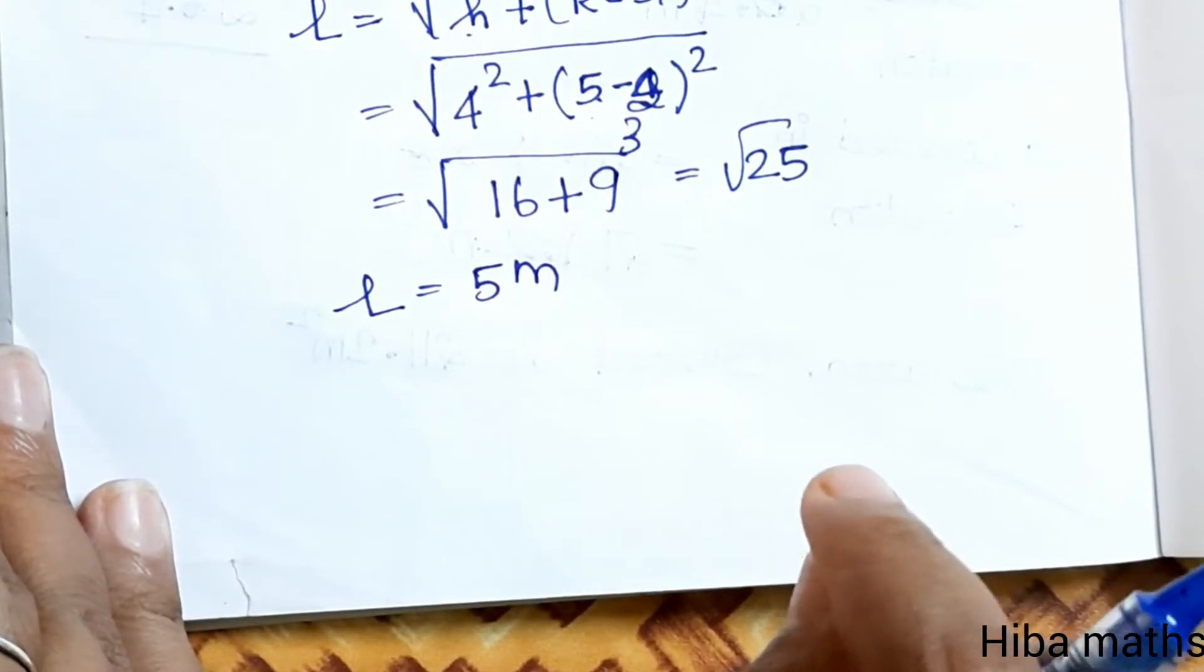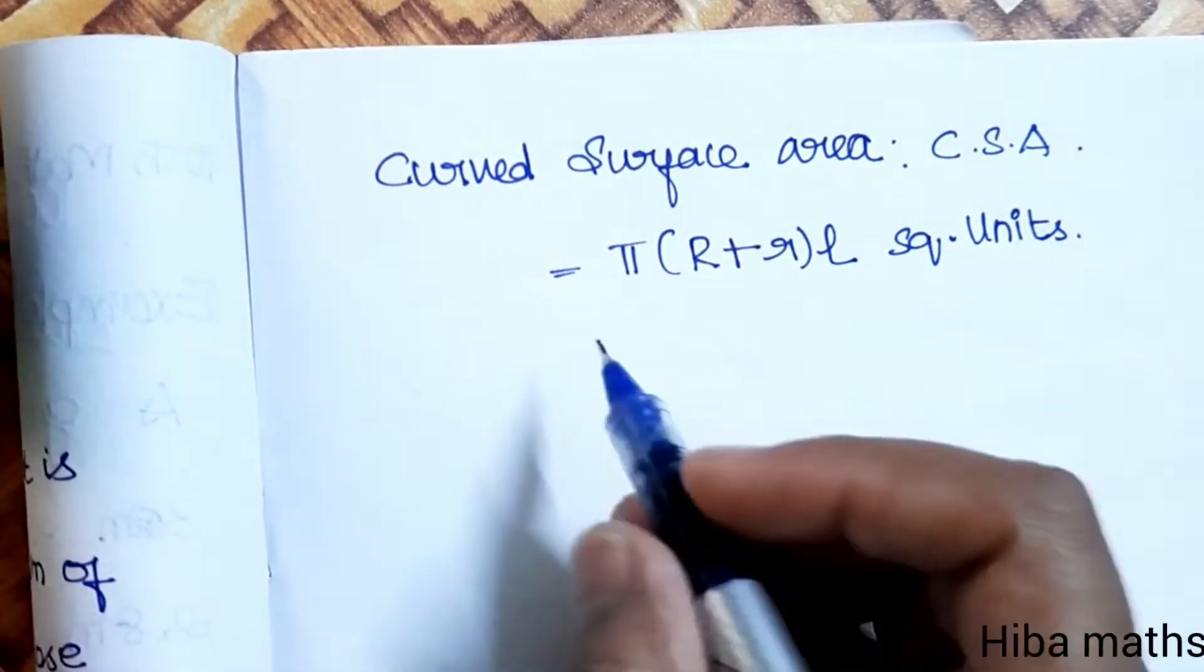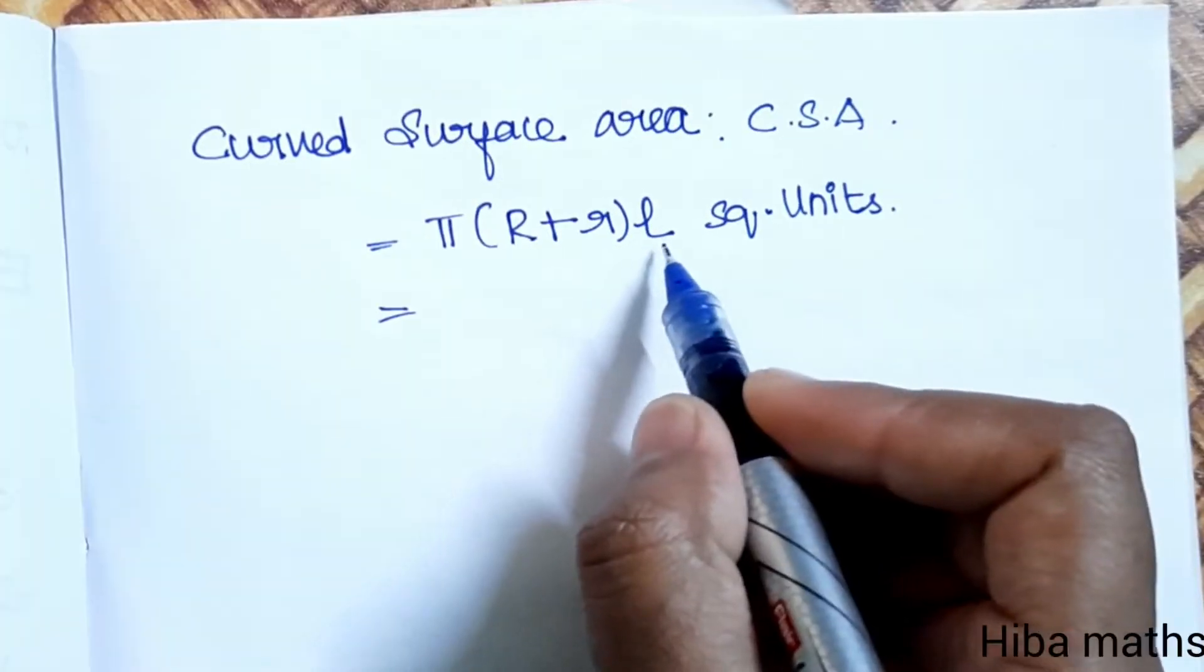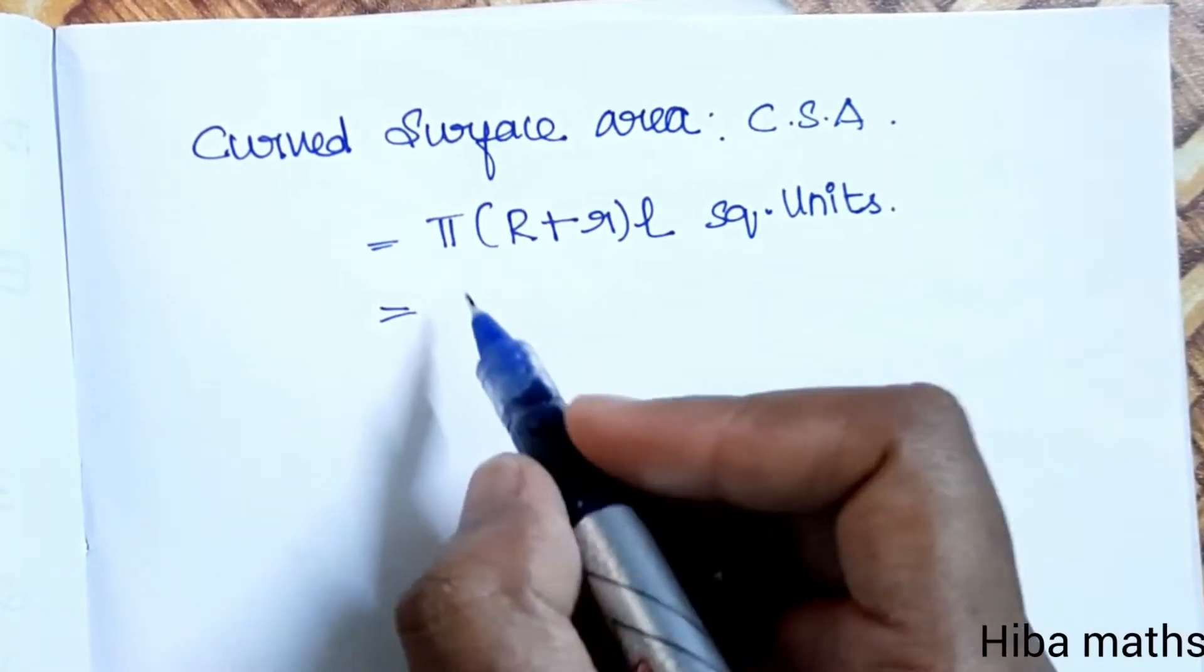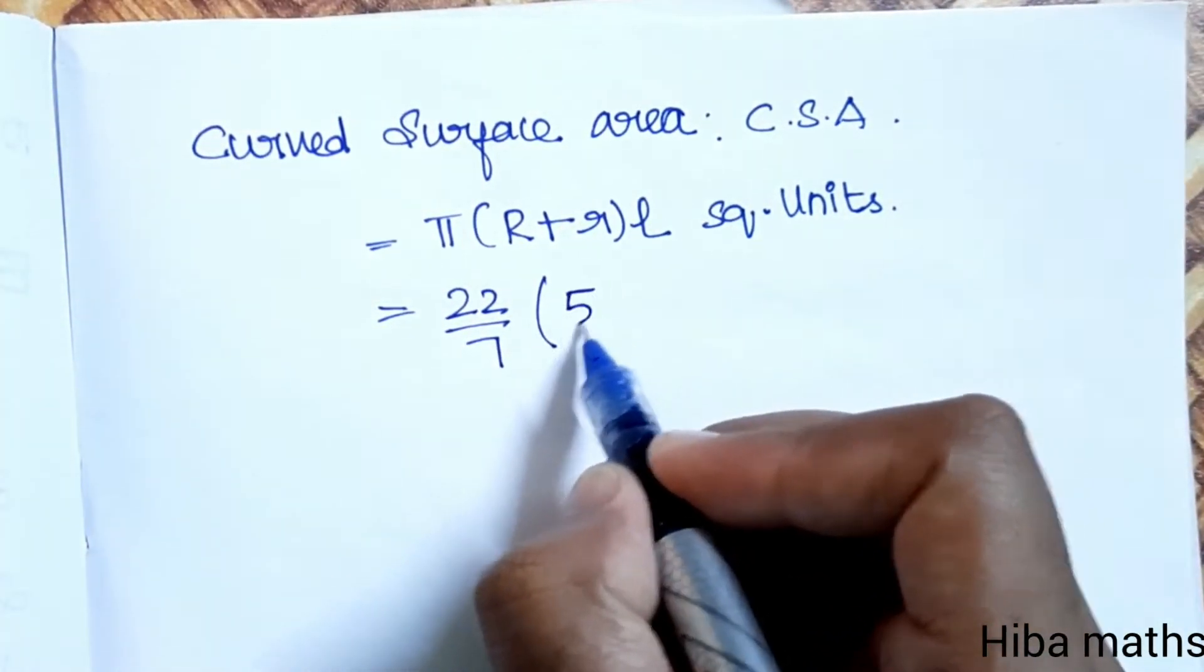First, curved surface area. CSA equals pi times R plus r times L in square units. Pi value is 22 by 7, capital R value is 5.